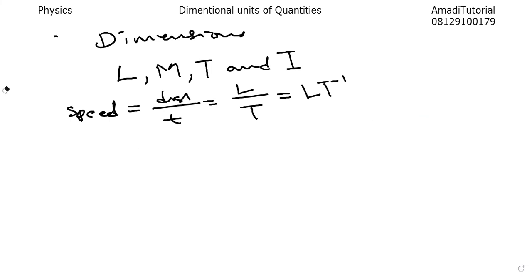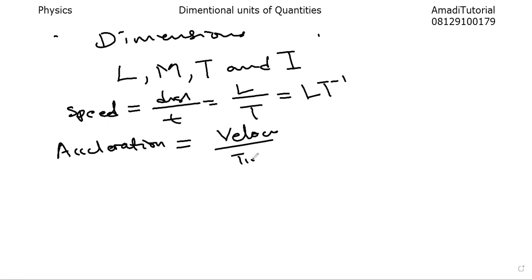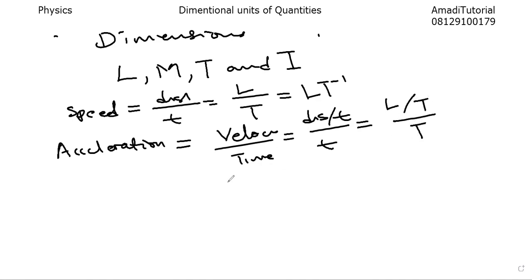Let's look at the dimensional unit for acceleration. We know that acceleration is velocity over time, and velocity on its own is displacement over time — then over another time. Displacement in its fundamental form is a length. So the dimensional unit for acceleration is length over time squared, which is the same as L times T raised to the power of minus two.